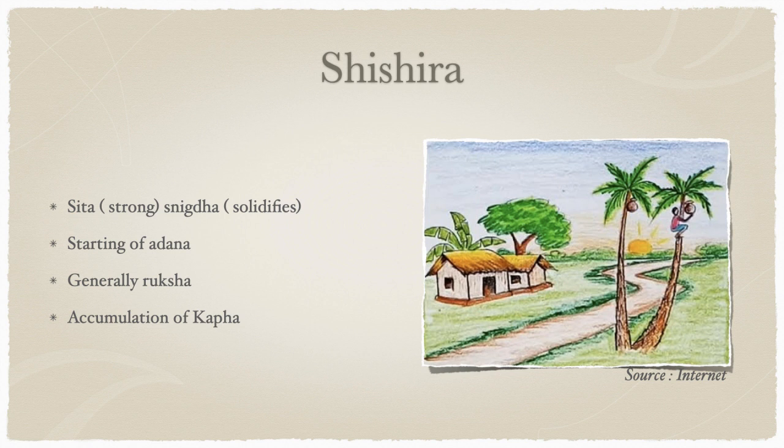Always remember: whenever one guna becomes extreme it starts showing the property of the other — extreme cold is hot, extreme hot is cold. In shishira, because of shita and snigtha in extreme form, there is an accumulation of kapha.